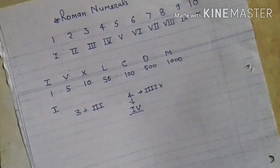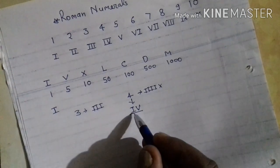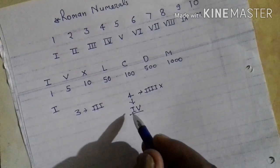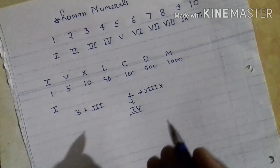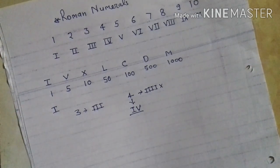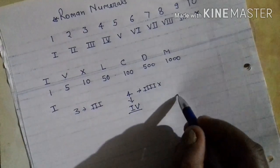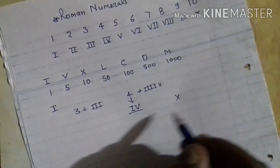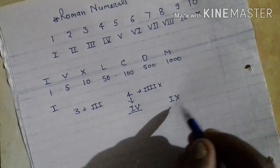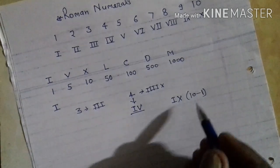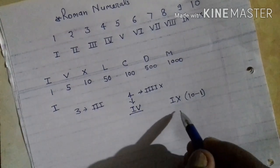This is 5, and 5 minus 1 is 4. If a smaller number is written to the left of a bigger number, then it is subtracted. This is the bigger number and this is the smaller number — the smaller number on the left is subtracted from the bigger number. For example, this is 10 and this is 1: 10 minus 1 equals 9. This is 9.